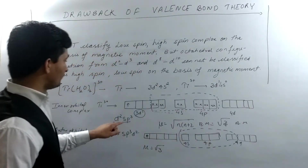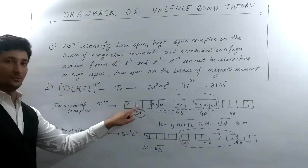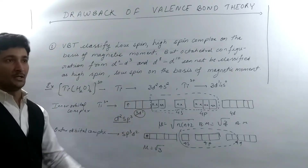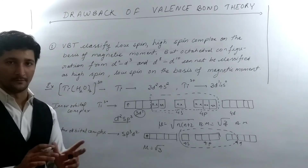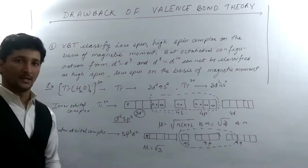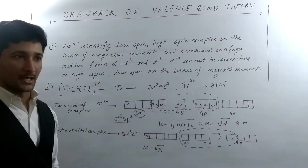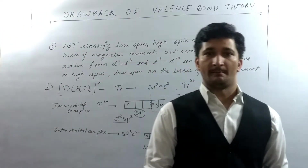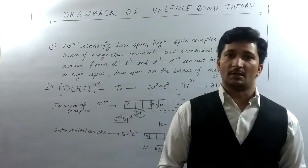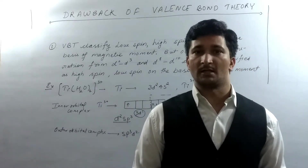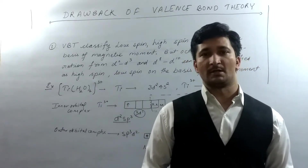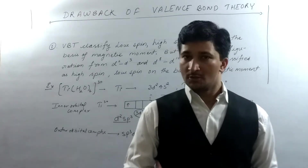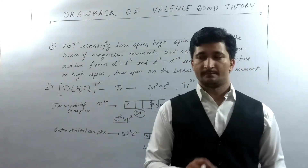Similarly, if the system involves D2 or D3, and even D0, they cannot be classified as high spin or low spin complex simply on the basis of magnetic moment. Because in all four cases — D0, D1, D2, D3 — the magnetic moment remains the same whether the hybridization is sp³d² or d²sp³. Note down this example; it is very important.